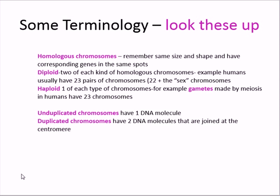In humans, gametes have 23 chromosomes instead of 46. And then of course we have from earlier the concept of an unduplicated chromosome, which has one molecule of DNA, and a duplicated chromosome, where you have two molecules of DNA per chromosome. We talked about this in the mitosis video.